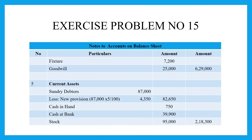For current assets: sundry debtors of 87,000 rupees, less new provision for bad debts of 4,350 rupees, gives 82,650 rupees. Closing stock is 95,000 rupees. Cash on hand is 750 rupees, and cash at bank is 39,900 rupees. Total current assets are 2,18,300 rupees.